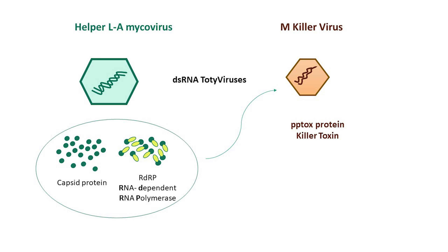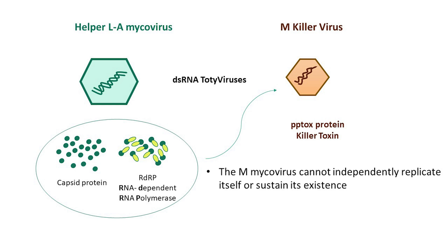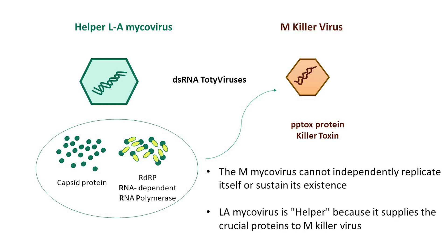From this, we can draw two significant conclusions. First, the M mycovirus cannot independently replicate itself or sustain its existence, consequently preventing the synthesis of the killer toxin. And second, this clarifies why the LA mycovirus is referred to as the helper, because it supplies the crucial proteins that enable the M killer virus to maintain its replicative cycle.